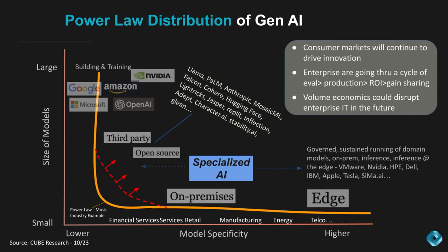We believe that, like many waves, the consumer adoption — in this case, ChatGPT — catalyzes innovation that bleeds into the enterprise. Our research shows that enterprises are currently going through a cycle of evaluation and experimentation, then leading to production with very specific use cases.